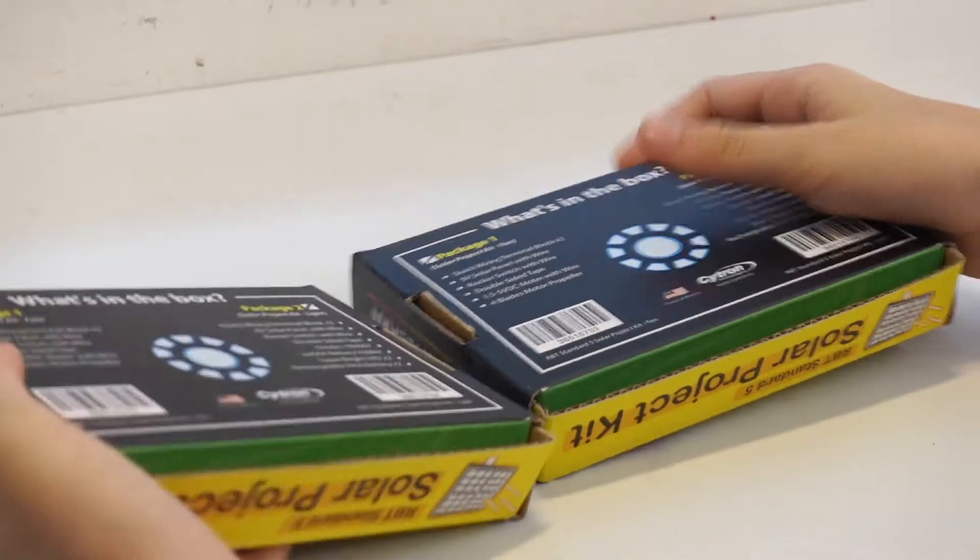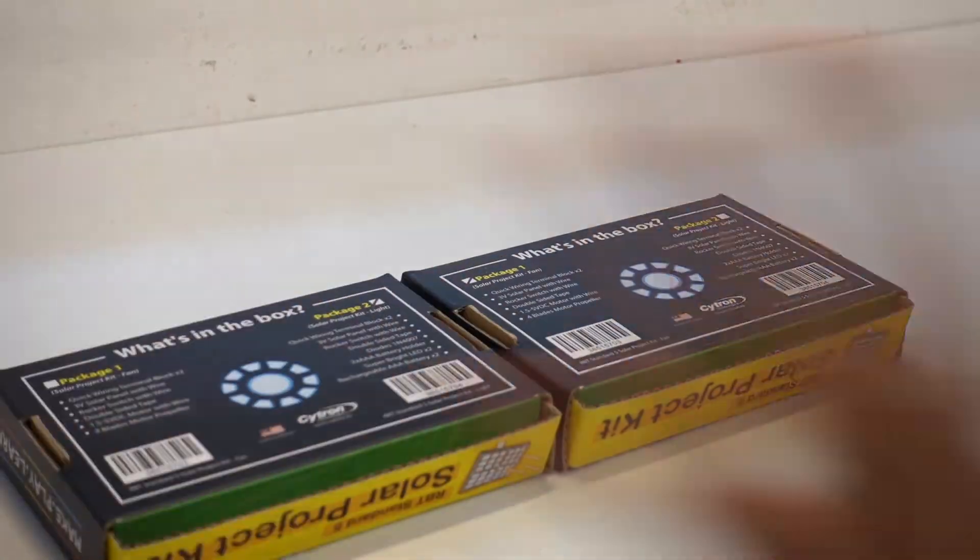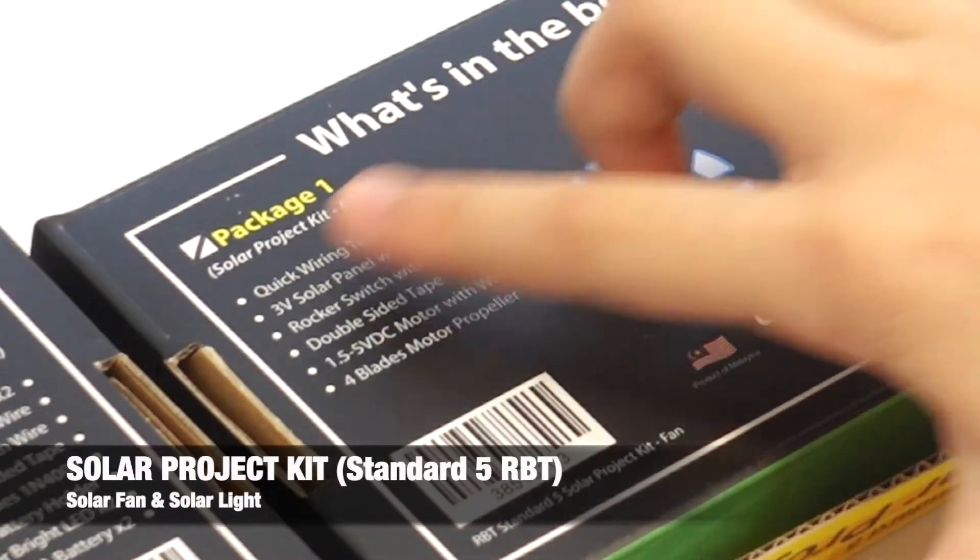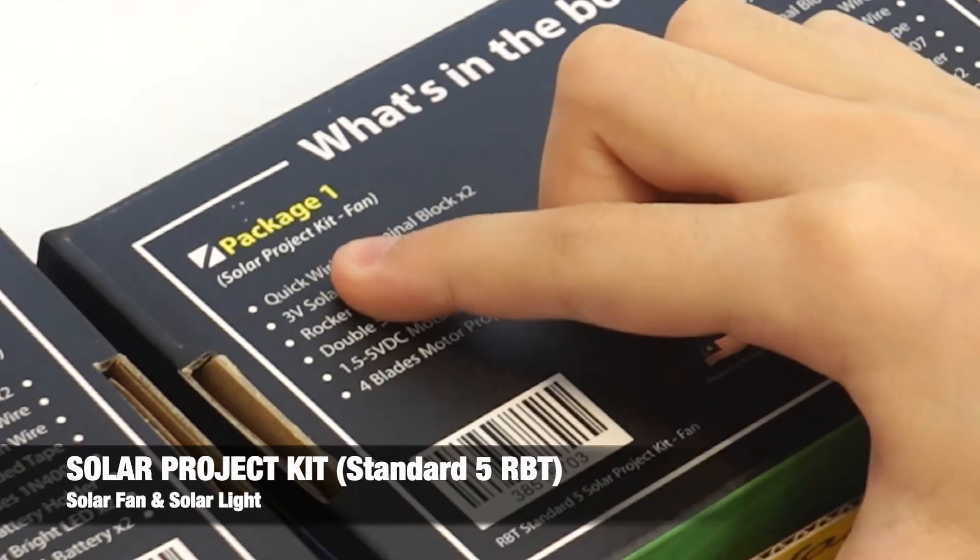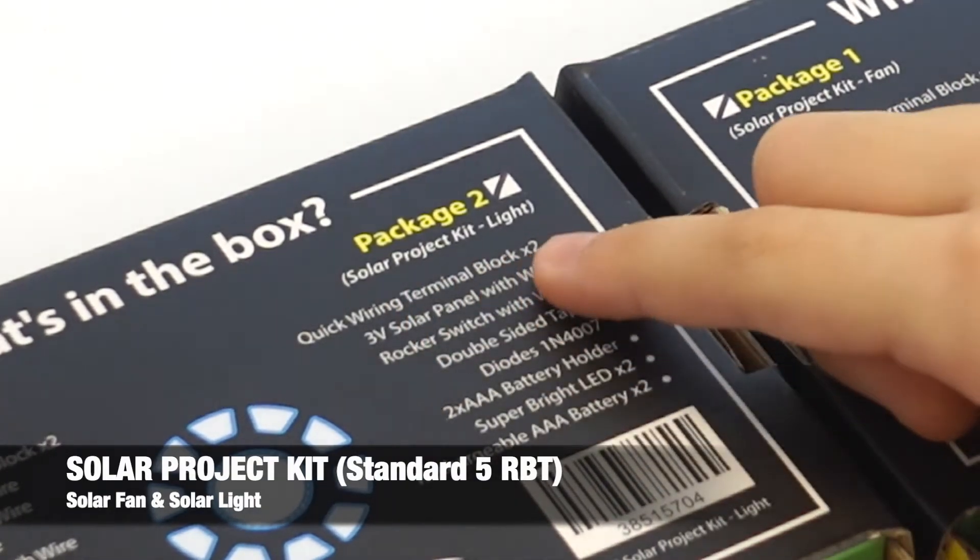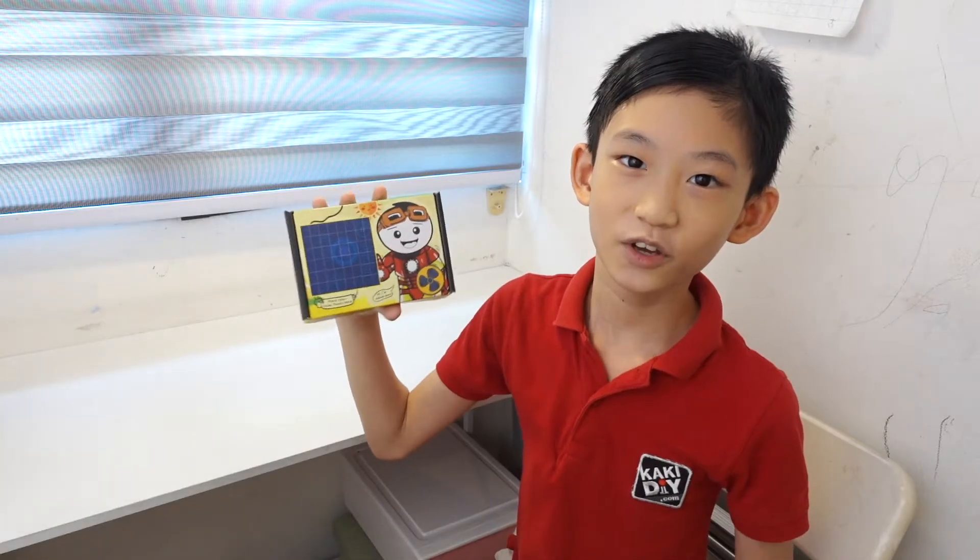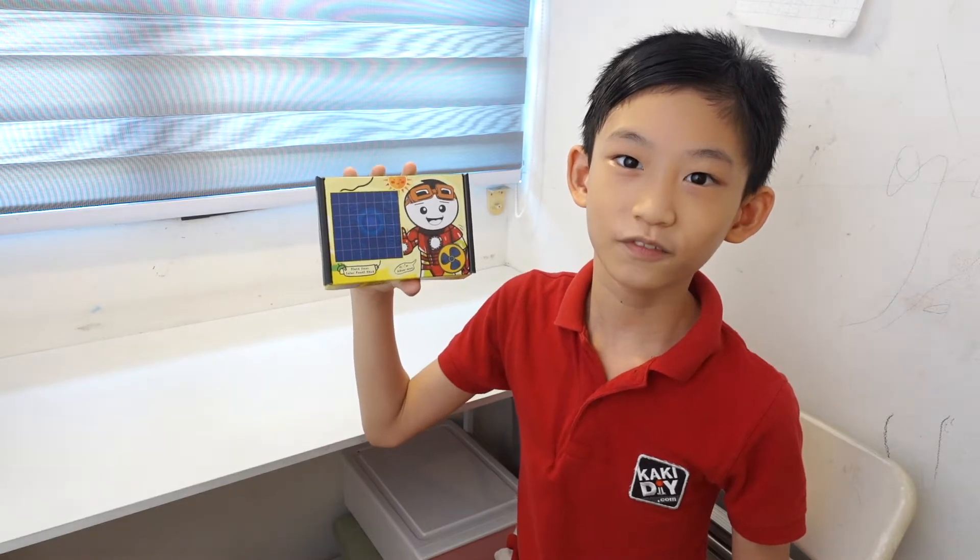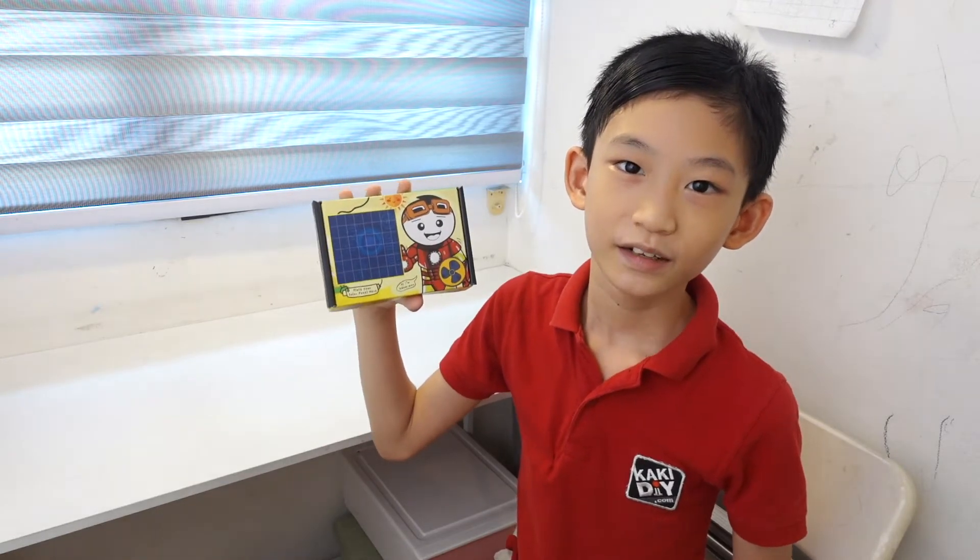Looks like there's package 1 and package 2. Package 1, we are building the solar projected solar fan. And package 2, we are building the solar projected solar light. For this video, we are making RBT standard 5 solar project kit, solar light.